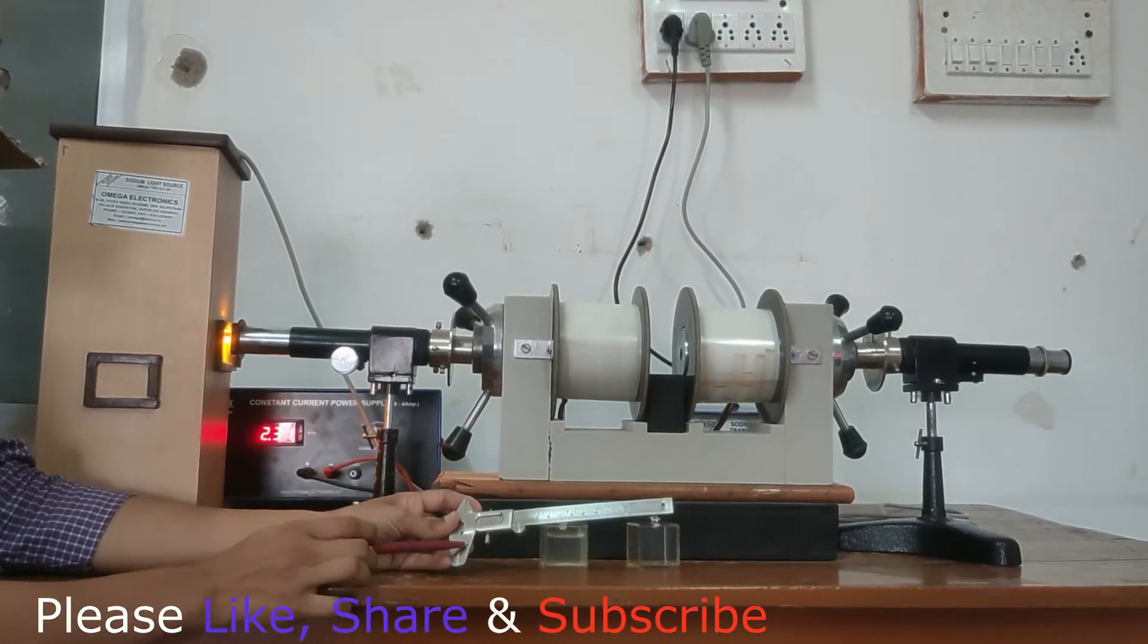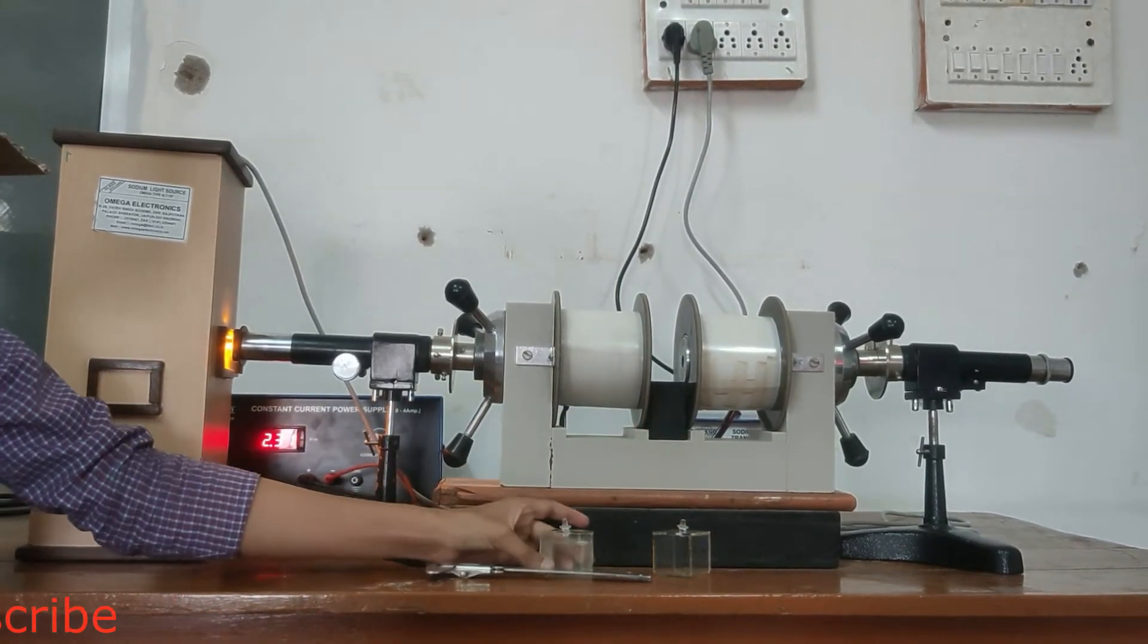And this will be a Vernier calipers, a hollow glass cube, and a glass cube with a substance.